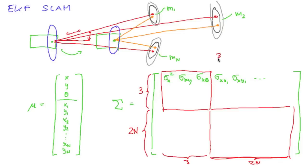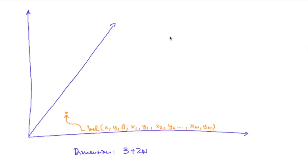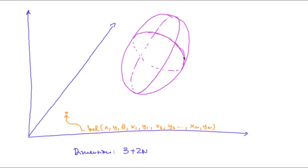The covariance matrix was a (3 + 2n) × (3 + 2n) matrix. Our belief is now defined in the space of all possible system states, but unfortunately I can't draw this anymore because the dimension is now 3 + 2n. This means if I pick a point here, it gives me the belief that the robot is at position x, y with heading theta and all landmarks are at positions x1, y1, x2, y2, and so on until xn, yn. In extended Kalman filter SLAM, we represented our belief by a multivariate Gaussian of that dimension — a high-dimensional ellipsoid.